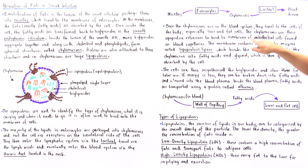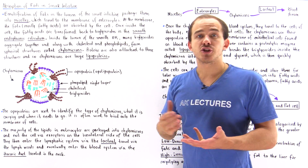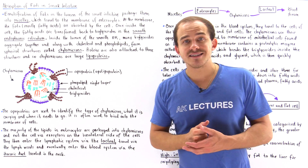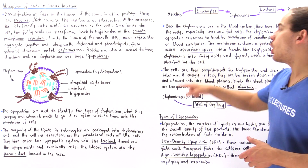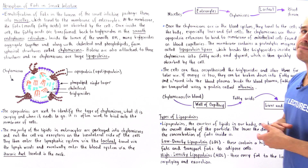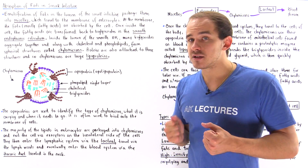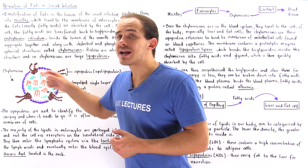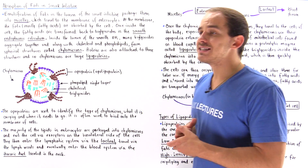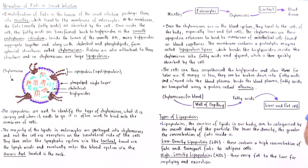The membrane of these endothelial cells contains special proteolytic enzymes known as lipoprotein lipases, which are responsible for breaking down the triglycerides into fatty acids and glycerol.